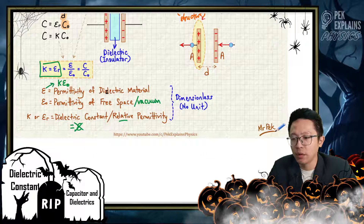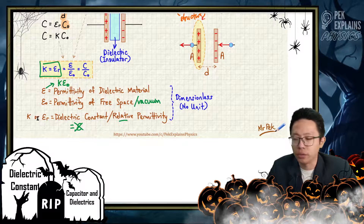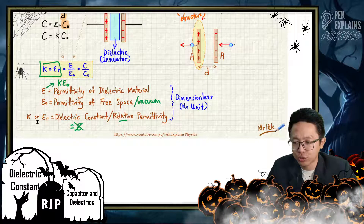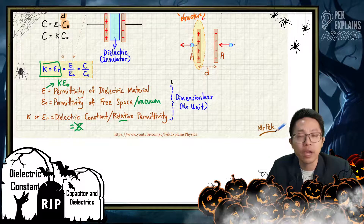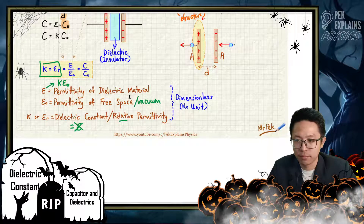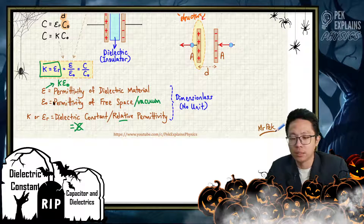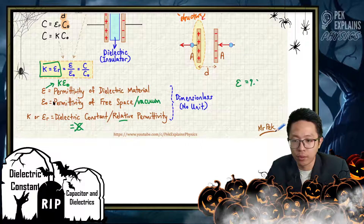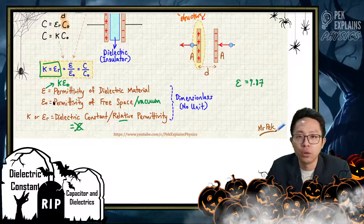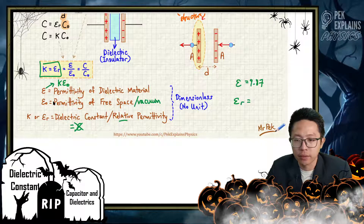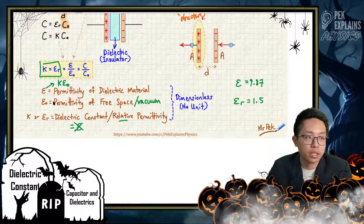All these values — the permittivity of dielectric material ε, permittivity of free space ε₀, and the dielectric constant K or εᵣ — all three are dimensionless. They have no dimension and no unit. They are just values, for example εᵣ might be 1.5 — just a value with no unit.